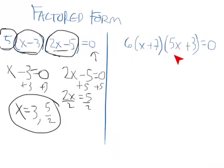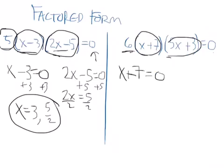And I'm going to do another one just like it over here on the right. Three things multiplied together give me 0. So either this equals 0, 6 never equals 0. Or this equals 0, x plus 7 equals 0. Or this thing equals 0, 5x plus 3 equals 0. And if I solve both these equations, they'll give me my answers for x.